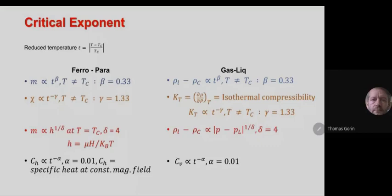If you go from ferromagnetic to paramagnetic and calculate gamma, and then go from paramagnetic to ferromagnetic and calculate gamma dash, both values are the same — close to 1.33. Similarly for gas-to-liquid, the isothermal compressibility (del rho / del P at constant temperature) also diverges in the similar fashion with exponent gamma equal to 1.33.